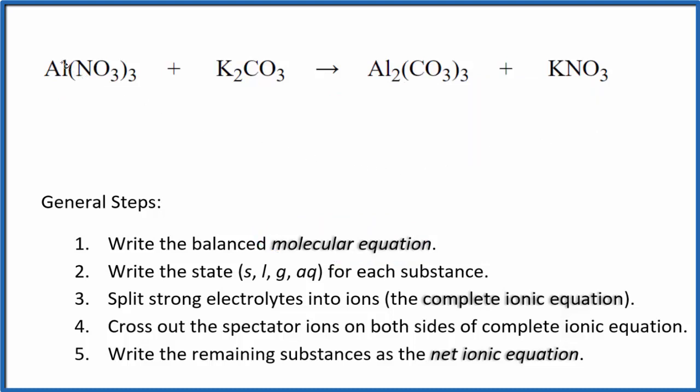To do that, I see I have one aluminum here and two here. Let's put a two in front of the aluminum nitrate. That balances the aluminum, but now I have these three nitrates times two, so I have six nitrates. Put a six in front of the potassium nitrate. The nitrates are balanced.